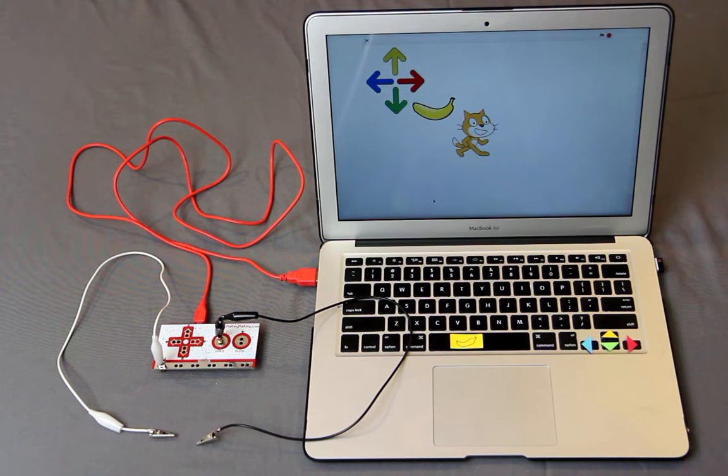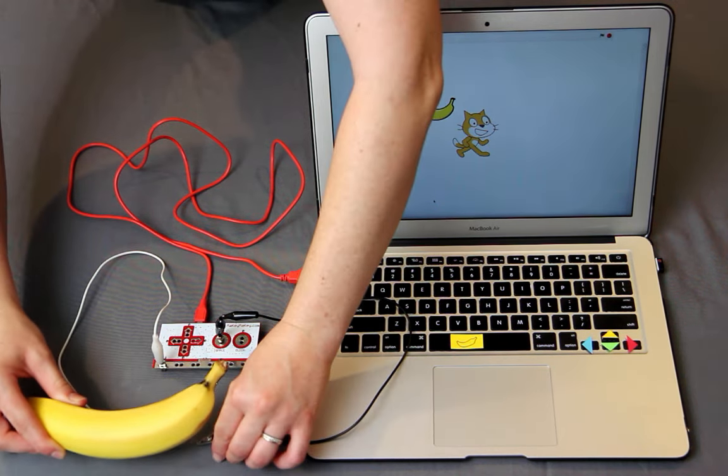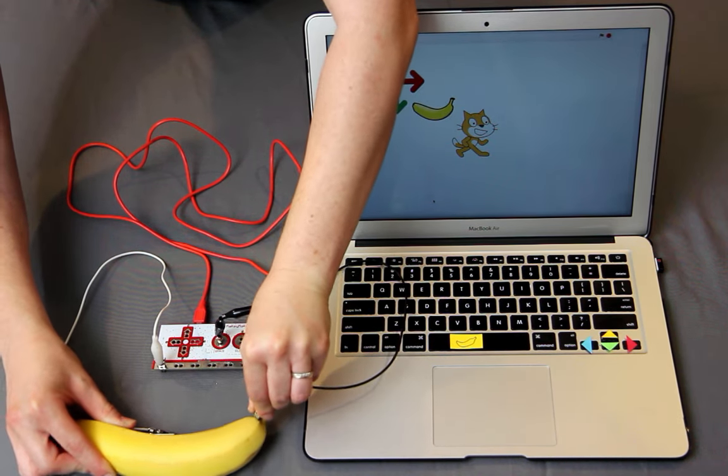Instead of touching the alligator clips together, we can connect the Makey Makey to everyday objects and turn them into the keyboard keys. And here, we are going to turn a banana into the space bar. Clip the alligator clip that is connected to the wire plugged into space to your banana.